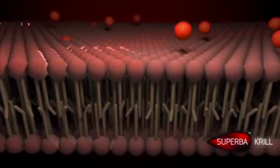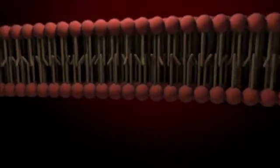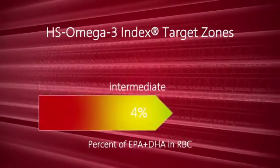Phospholipid omega-3s are more efficiently incorporated into the cell walls. The more omega-3s in the cell wall, the healthier and more flexible it becomes. This can be measured with the omega-3 index.